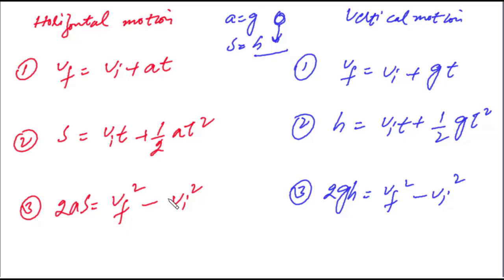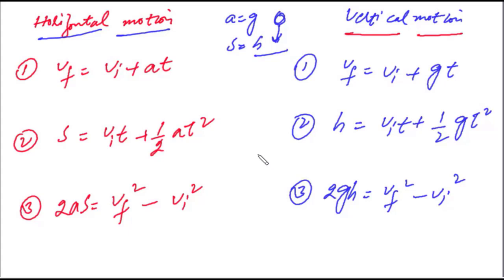یہ دونوں sets of equations uniformly accelerated motion کی ہیں۔ فرق صرف یہ ہے کہ پہلی set body کی horizontal motion کو show کرتی ہے اور دوسری والی body کی vertical یعنی free fall motion کو۔ آپ نے صرف a کو g سے اور horizontal distance کو vertical height سے replace کرنا ہے۔